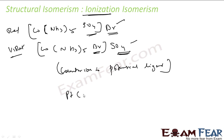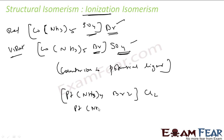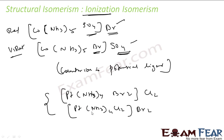Another example: tetraminedibromoplatinum chloride versus tetraminedichloroplatinum bromide. These are further examples of ionization isomers.